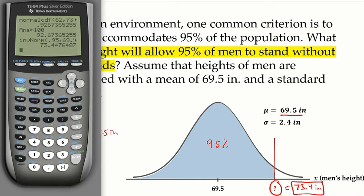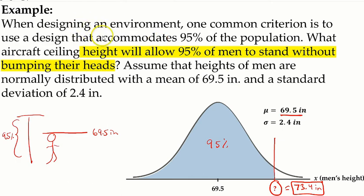You can always check whether your answer makes sense by using the mean as your reference point. The mean is 69.5 inches, and we expect something higher — 73.4 inches is indeed higher than that, so the answer makes sense. If you have any questions, shoot me an email. Thank you.